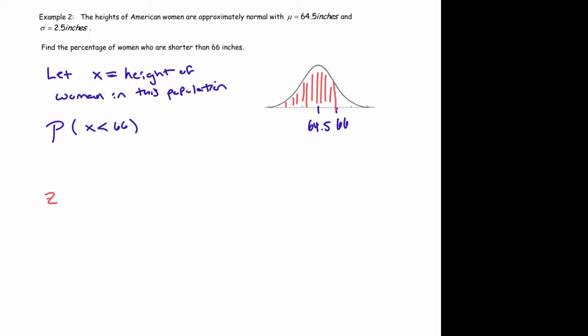So to find our z-score, as we learned, we take the data value, we subtract the mean, and we divide by the standard deviation, which is 2.5. And when you do that on the calculator, you get 0.6. So such a woman is 0.6 standard deviations above the mean.